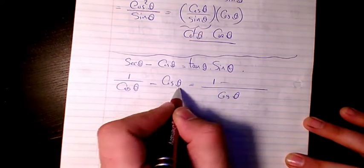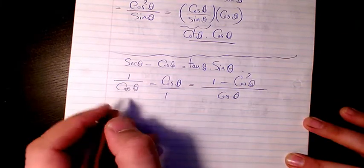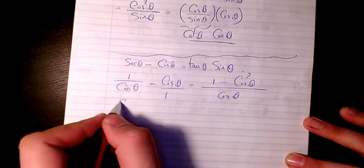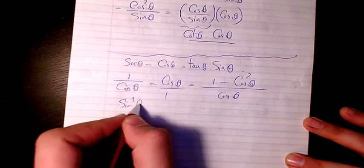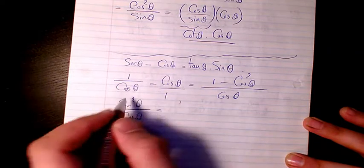Multiplied by cosine theta, this is going to be 1 minus cosine squared theta over cosine theta. And then 1 minus cosine squared is the same as sine squared theta divided by cosine theta. Then I decompose.